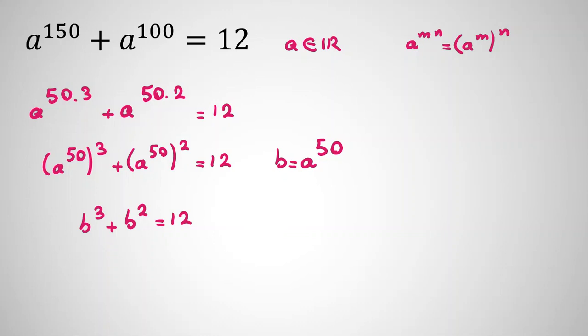You can see b equals 1 doesn't work, b equals 2 works. 2 cubed plus 4 equals 12, which is 8 plus 4. So if b equals 2, let's check this case first.